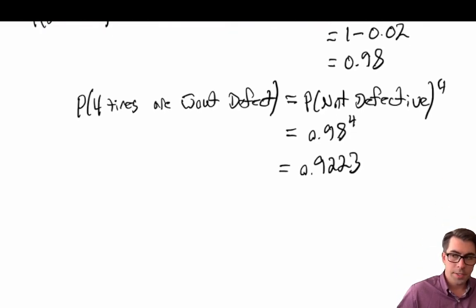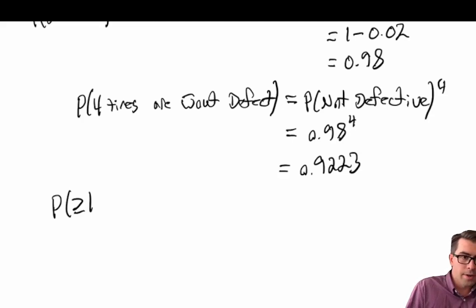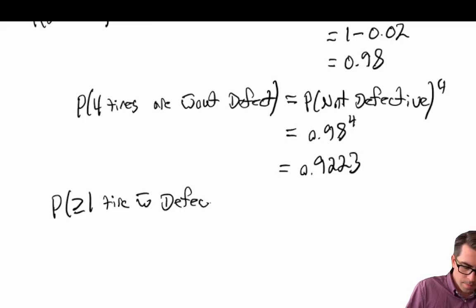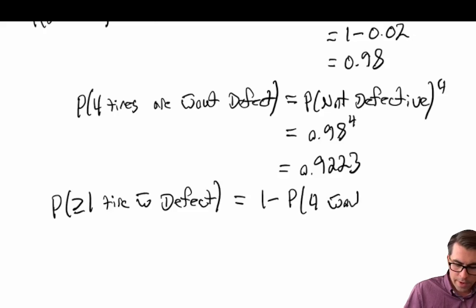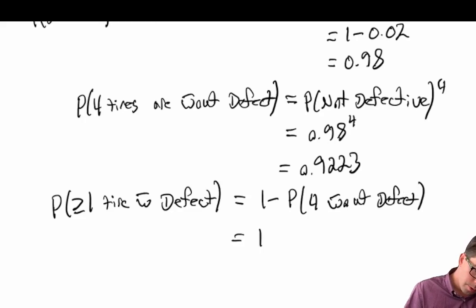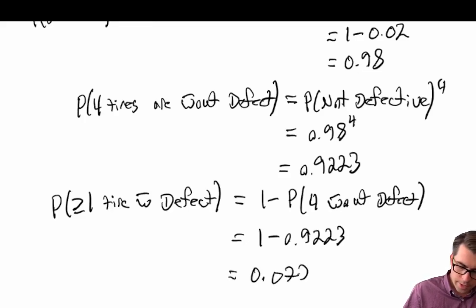We're making progress. The question asks for the probability of at least one tire with a defect, which is the complement of four tires without defect. So it's one minus the probability of four tires without defect, which equals one minus 0.9223, giving us 0.0777.